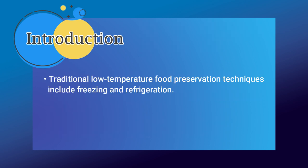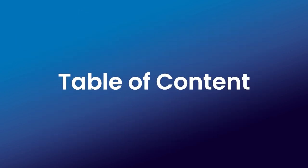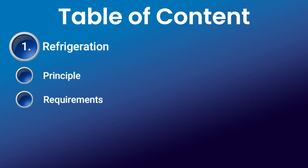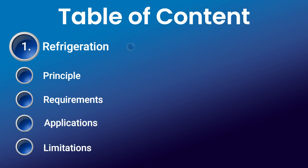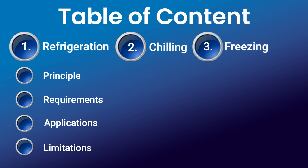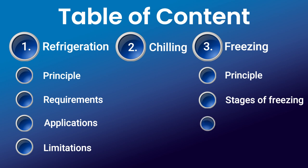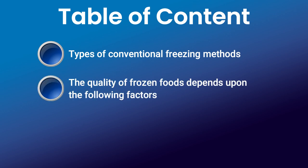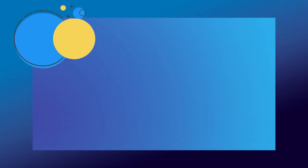Traditional low temperature food preservation techniques include freezing and refrigeration. Now let's see the table of content for today's topic. First we will learn about the refrigeration method — its principle, requirements, application, and types of conventional freezing methods, and the quality of frozen food and which factors it depends on.